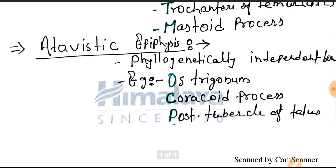Then atavistic epiphysis. Atavistic epiphysis is a phylogenetically independent bone. Example is the os trigonum, coracoid process of the scapula, and posterior tubercle of the talus.